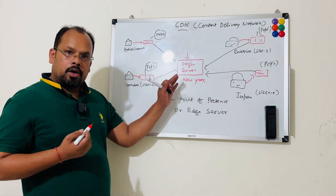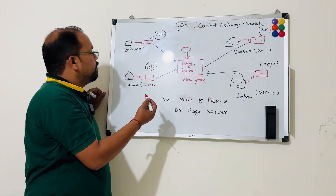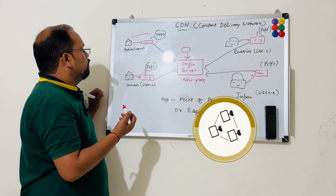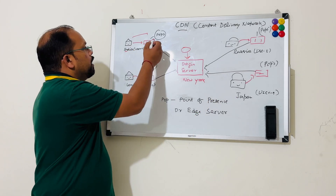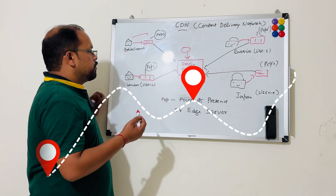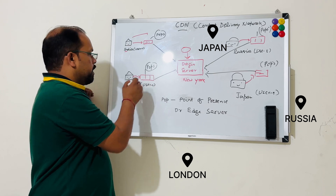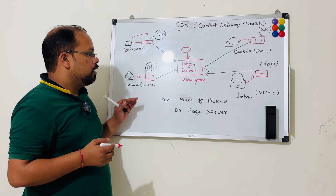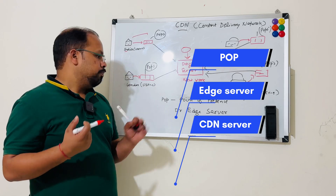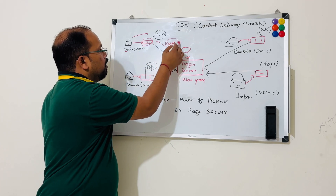Instead of a single origin server where all the data is present, CDN basically distributes servers to nearby locations. For example, if an Indian user has a data center or CDN server located in Mumbai, the distance is reduced. Similarly, for users in London, Russia, or Japan, we have a server nearby. These servers we call CDN servers, edge servers, or PoP — which stands for Point of Presence.